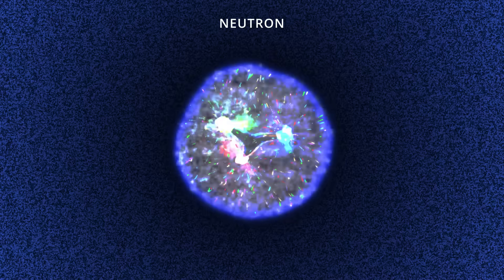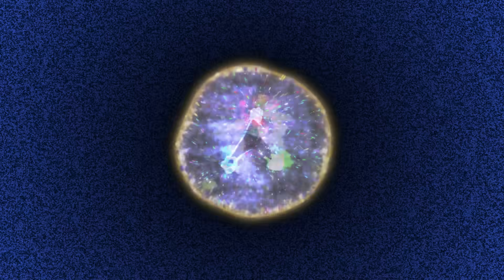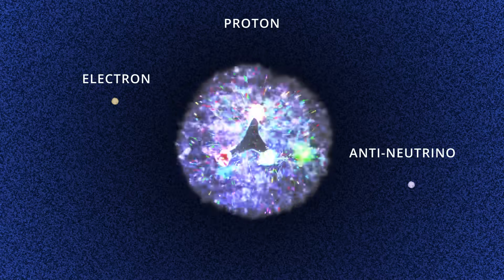neutrons on their own are unstable and will quickly decay into a proton, electron, and antineutrino.